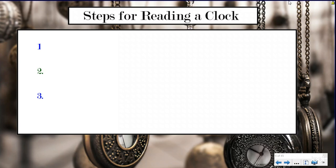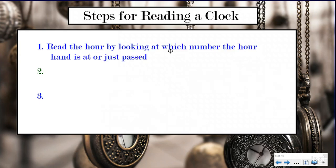Our steps for reading an analog clock. And again, these are for analog clocks, the clocks with the hour and the minute hands, not the digital clocks, because those clocks will literally just tell you the time. Our first step is to read the hour by looking at which number the hour hand is at or just passed. So sometimes the hour hand will be pointing directly at the number. And sometimes it might be in between the one and two. But you're looking at the number, the hour that the hand just passed. You're not looking ahead, you're looking behind if it's between those two numbers.